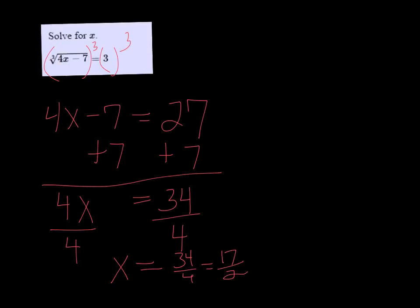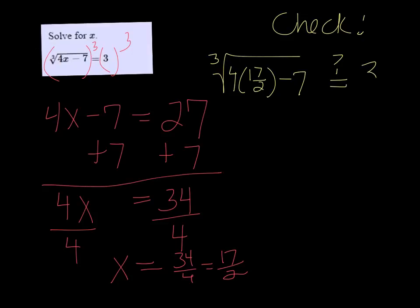But we want to make sure it works, so we're going to do a check. Plug it back into the original, so it's the cube root of 4 times 17 over 2. So 4 times 17 over 2 is going to be 34, and we're going to subtract 7 from that. And so 34 minus 7 is the cube root of 27, and the cube root of 27 is indeed 3, so it does work.